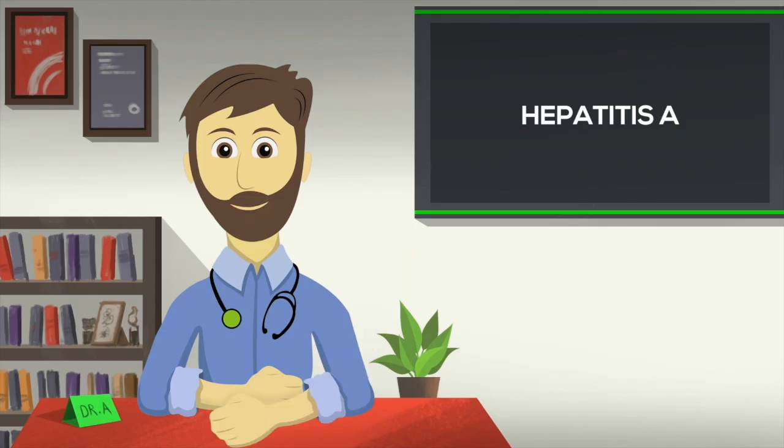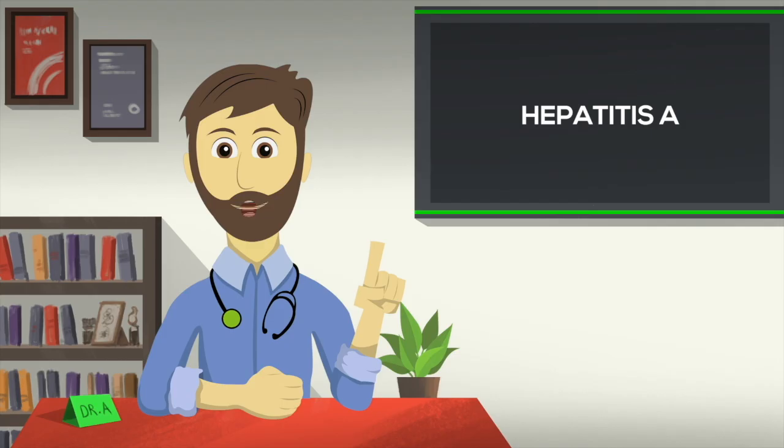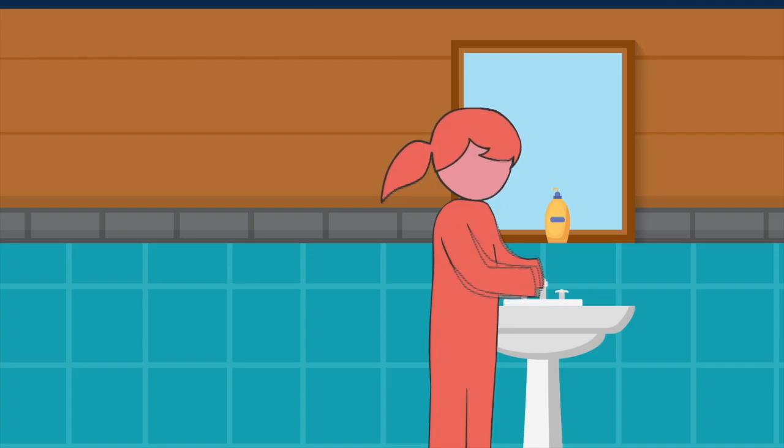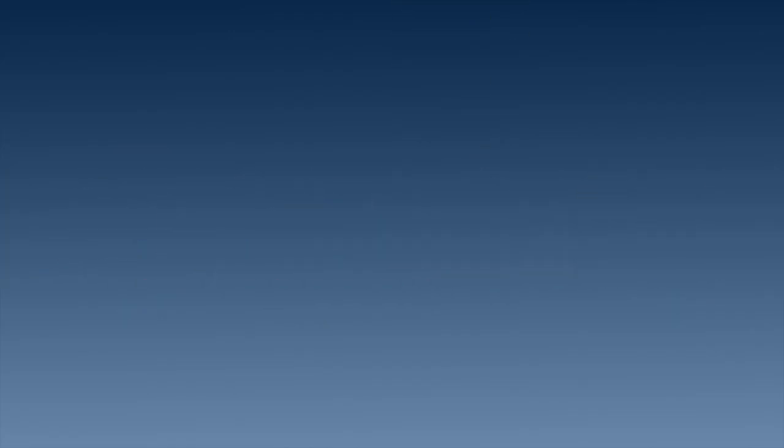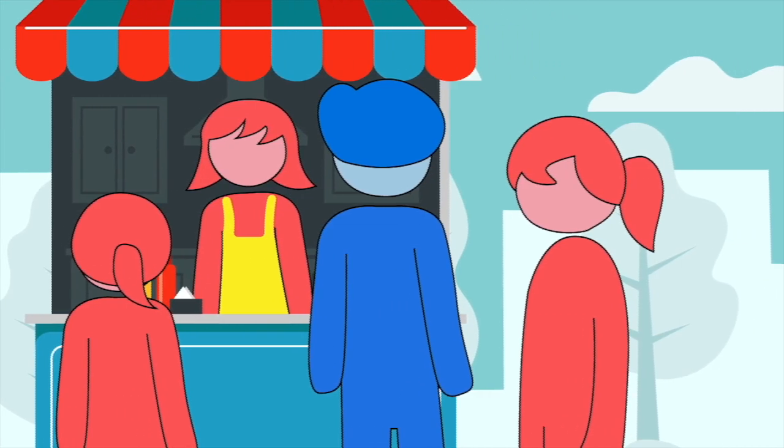Here are some good hygiene habits to protect us from hepatitis A and other infections that spread in the same way. Number 1. Always wash your hands with soap and water after using toilet, after changing diapers of children, before eating, before cooking food or touching utensils. Using soap and water can get rid of this virus. This is extremely important for people who prepare or sell food.